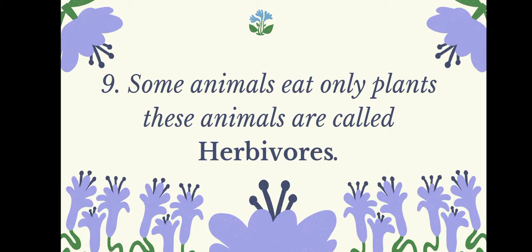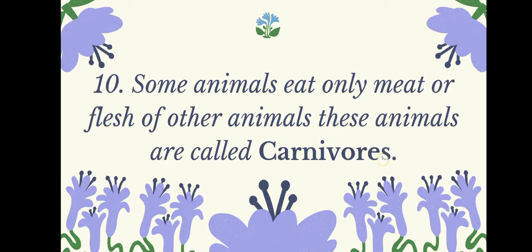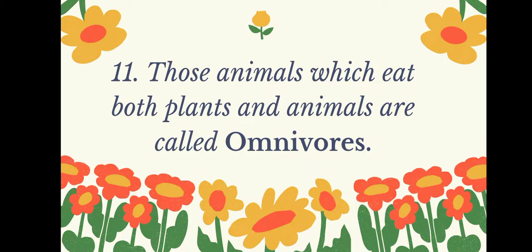Some animals eat only plants; these animals are called herbivores. Some animals eat only meat or flesh of other animals; these animals are called carnivores. Those animals which eat both plants and animals are called omnivores.